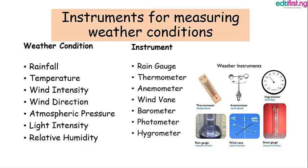There are some instruments used for measuring weather conditions. For rainfall, we use a rain gauge. For temperature, we use a thermometer. For wind intensity, we use an anemometer. For wind direction, we use a wind vane. For atmospheric pressure, we use a barometer. For light intensity, we use a photometer. For relative humidity, we use a hygrometer. You can see the pictures there.